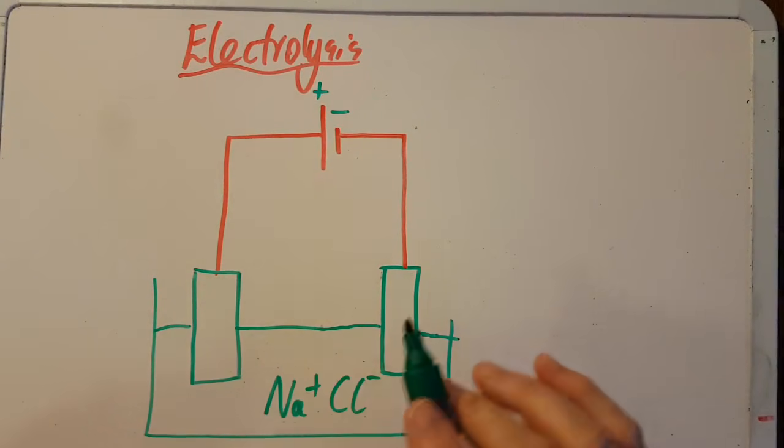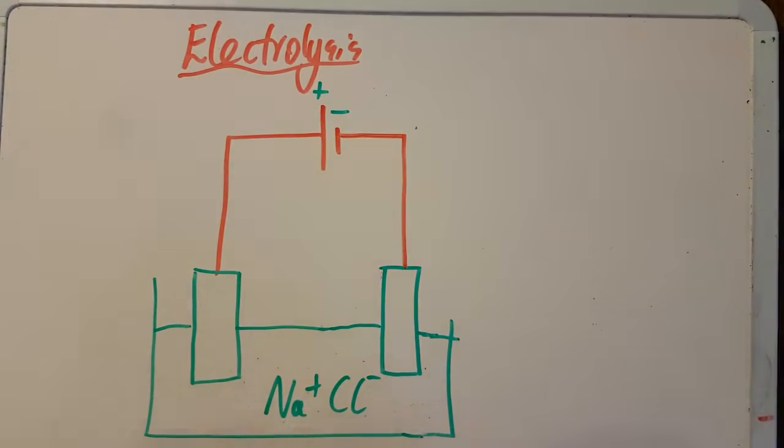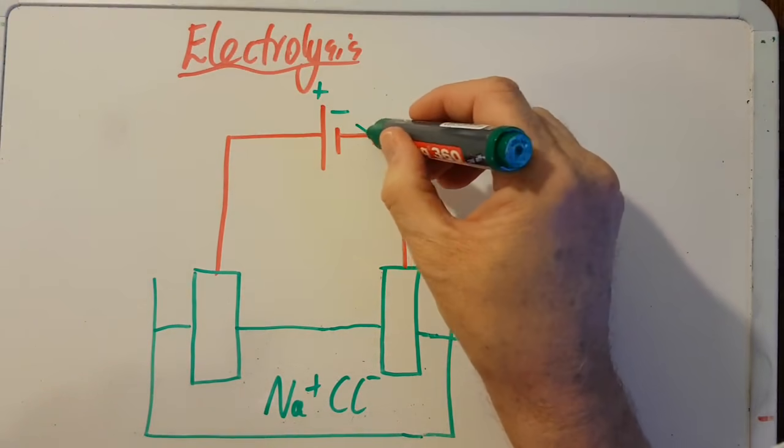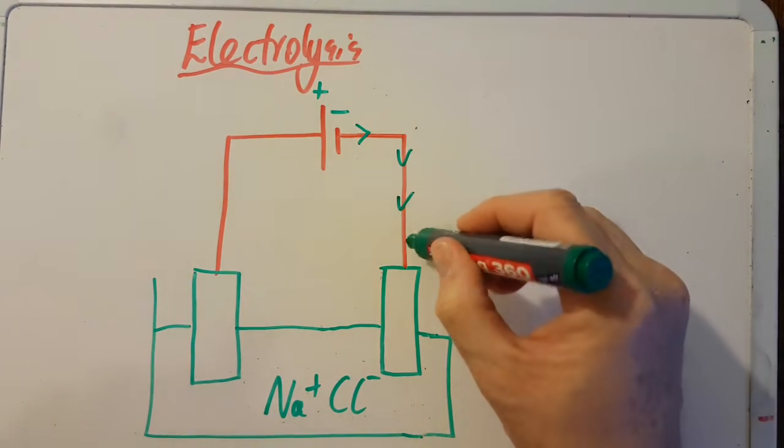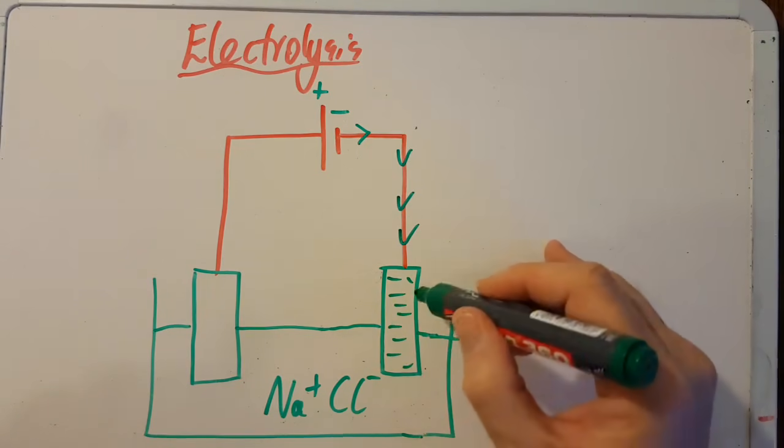So electrolysis, that isn't the one with a salt bridge, that's the one with the power source breaking apart something like sodium chloride into sodium and chlorine. So if the power source has a negative end here, that means it's pumping electrons down to this electrode. So this electrode is going to be negative, so this must be the cathode.